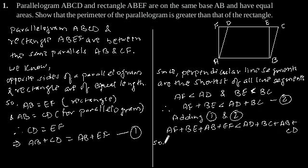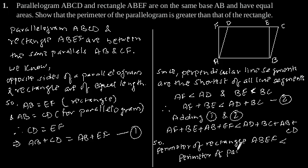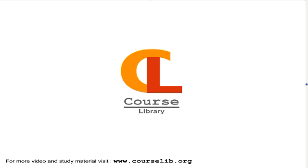So we can say that the perimeter of rectangle ABEF is smaller than the perimeter of parallelogram ABCD, as proved.